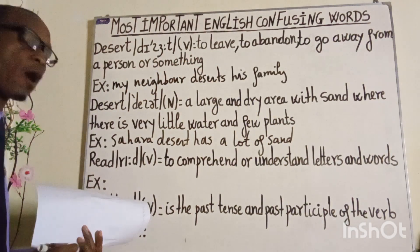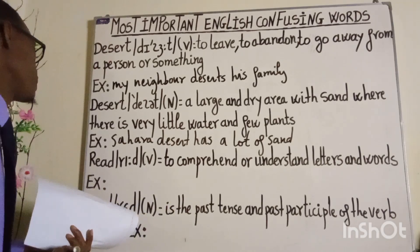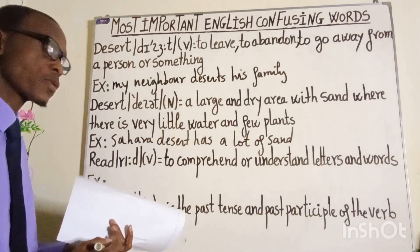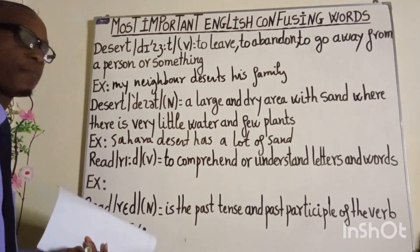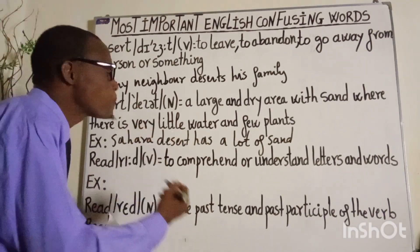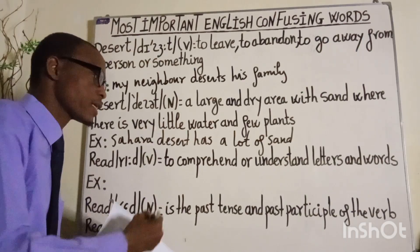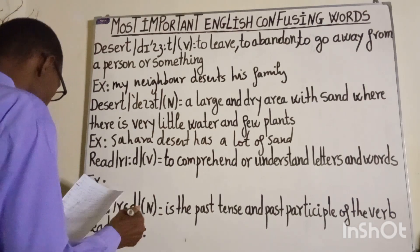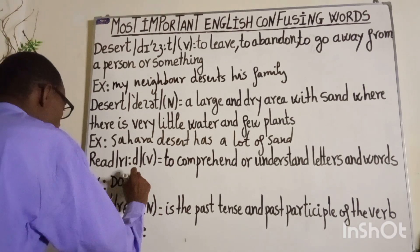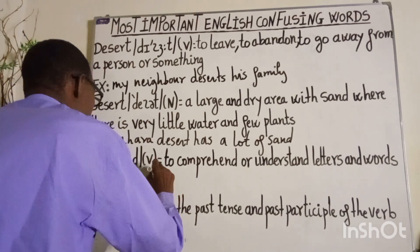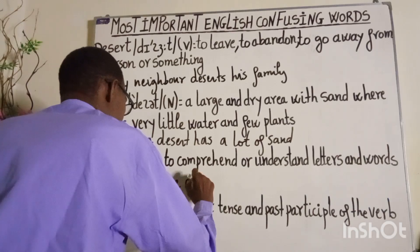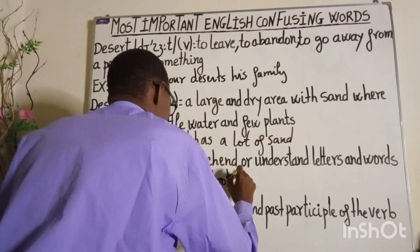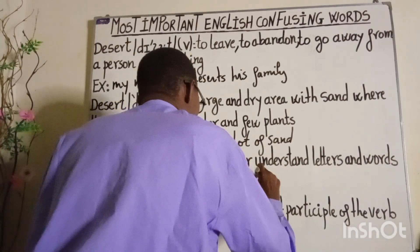Moving on to our third word, which is spelled R-E-A-D. It is a verb and it is pronounced as 'read' — repeat after me: read. It means to comprehend or understand letters and words. Let's have an example: Do you have any books to read?